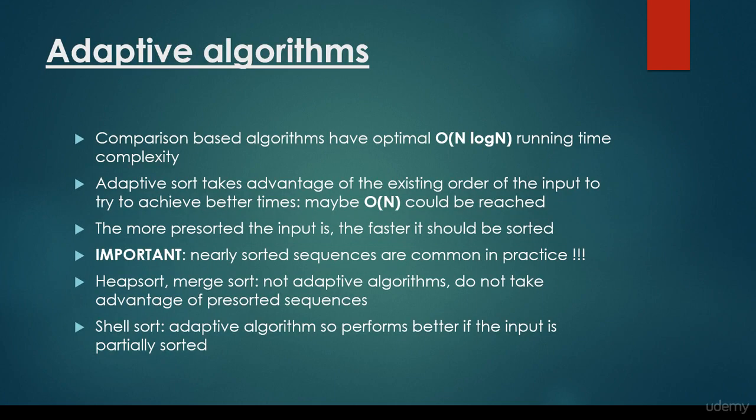Comparison-based algorithms have optimal O(n log n) running time complexity. This is what we have been discussing in the previous lecture. An adaptive sort takes advantage of the existing order of the input to achieve better time complexities, maybe O(n), so linear time complexity can be reached. The more pre-sorted the input is, the faster it should be sorted.